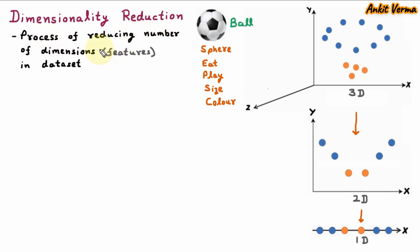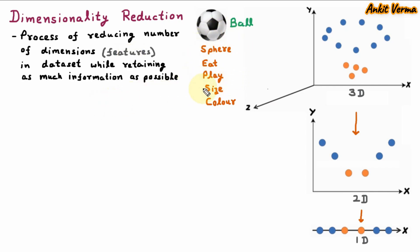So reducing the number of features or reducing the dimension is called dimensionality reduction. But there is a condition: it should be done while retaining as much information as possible. The meaning is we can reduce the features or reduce the dimension, but the information should not be lost. Out of these five features, if we are reducing to only three features, then the machine learning model should correctly recognize the ball.